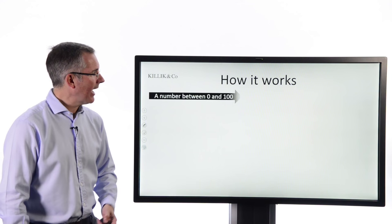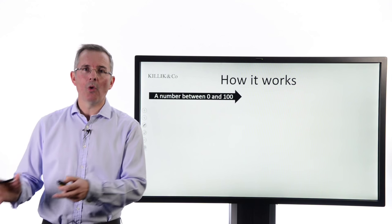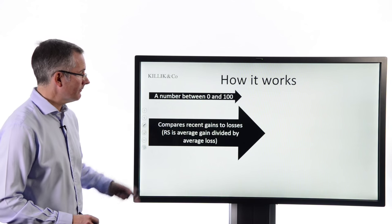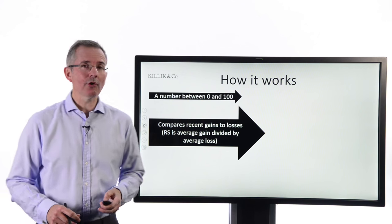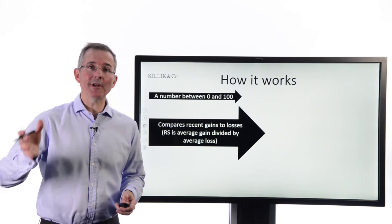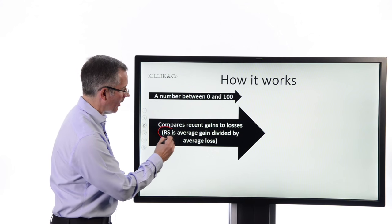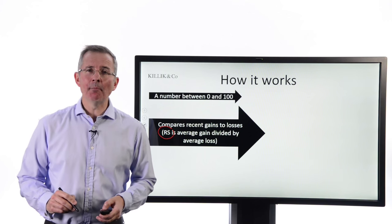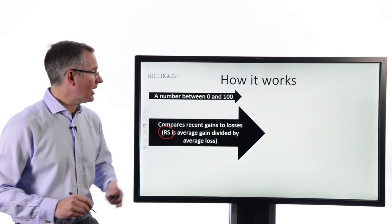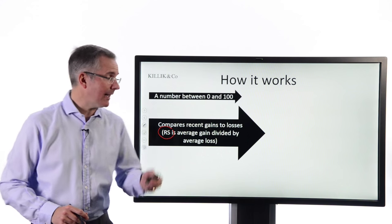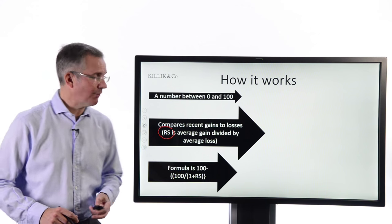So here it comes, how it works. It gives you basically a number between 0 and 100. So so far, so good. How's the number calculated? It compares recent gains to losses over a number of previous trading sessions and relative strength, it's the RS, the indicator is the number that comes out, is the average gain divided by the average loss. Simplifying the approach very slightly here, that triggers a fairly grim looking formula.